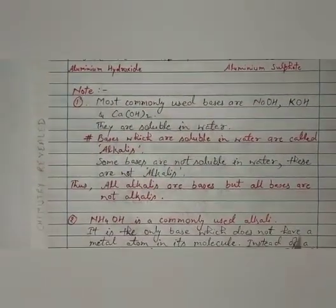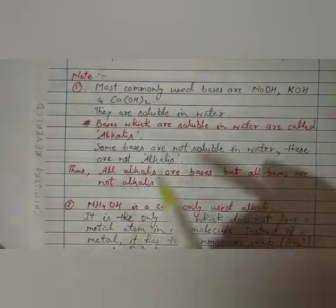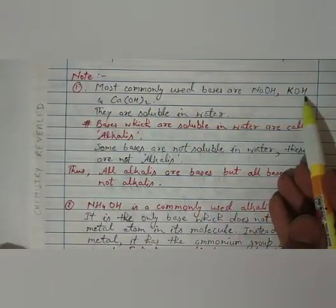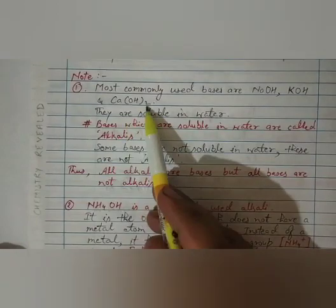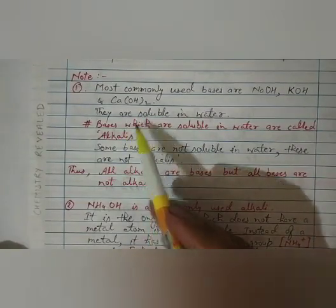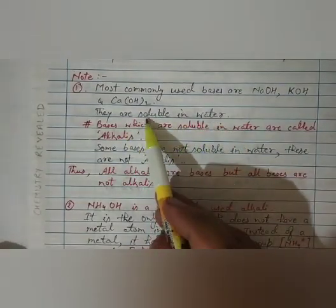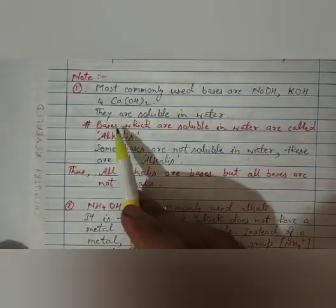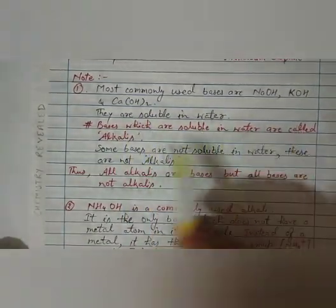Now very important point to be noted, that is most commonly used bases are sodium hydroxide, potassium hydroxide, and calcium hydroxide. They are soluble in water. Means if we put these bases in water, they will get dissolved in water. So the bases which are soluble in water are called alkalis.